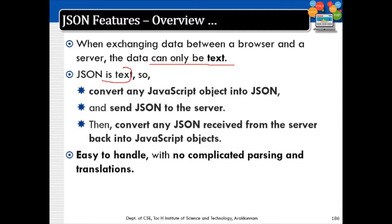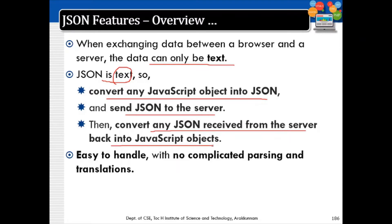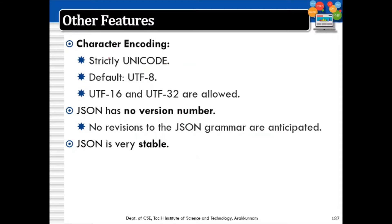JSON is language independent — we can use it in any programming language, and it is very easy to parse. When exchanging data between a browser and the server, data can only be text. JSON is text, so it can convert any JavaScript object to JSON, send JSON to the server, and convert the received JSON back to a JavaScript object. It uses UTF-8 encoding and has no version number, making it very stable.